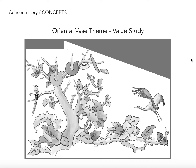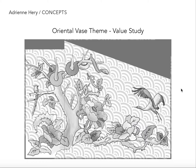The next step would be starting to figure out the value — getting a better sense of how things will sit with light and dark in the space. We talked about incorporating another element into the background, so I'll do that once placement is decided. I started to mock up some ideas here, like a kind of simple geometric Japanese design — something like this could be done.